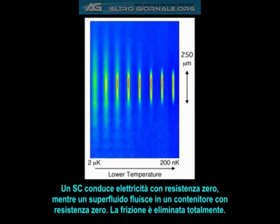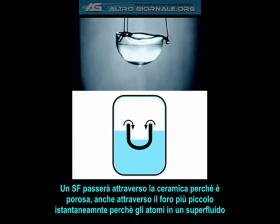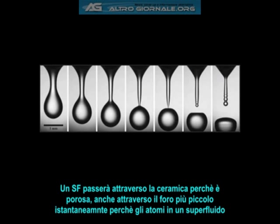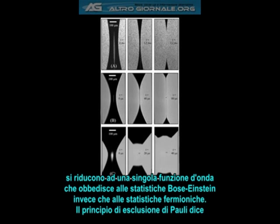Friction is totally eliminated. A superfluid will pour straight through a ceramic container because it is porous. It will also flow through the tiniest hole instantly, because all the atoms in a superfluid reduce to a single wave function, which obeys Bose-Einstein statistics instead of fermionic statistics.